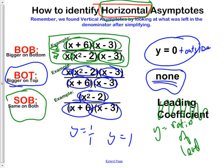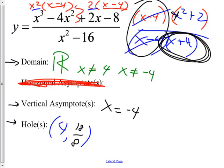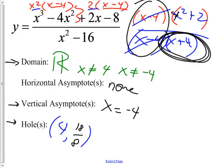Let's go back to that earlier problem and finally do the horizontals. What would the horizontals be? The top is bigger — so BOT. What's the rule for BOT? None — there are no horizontal asymptotes. What if it had been bigger on the bottom? You'd say y = 0. And if it had been the same on both? You'd do a ratio — in this case, it would be 1 over 1, giving y = 1.